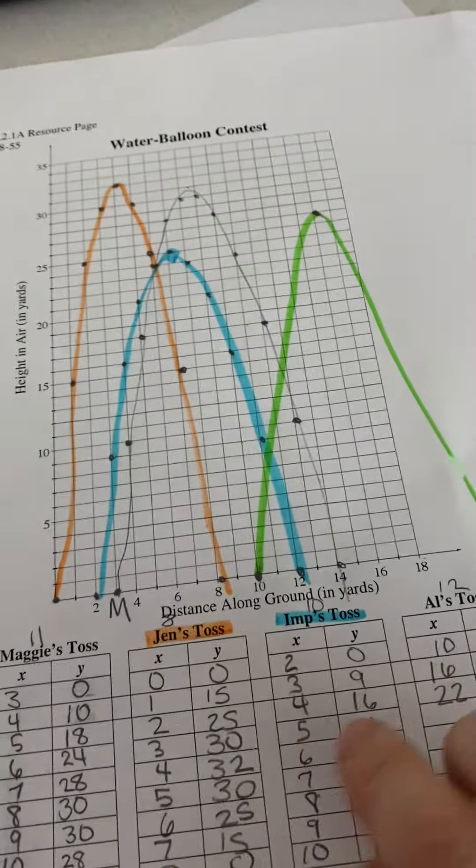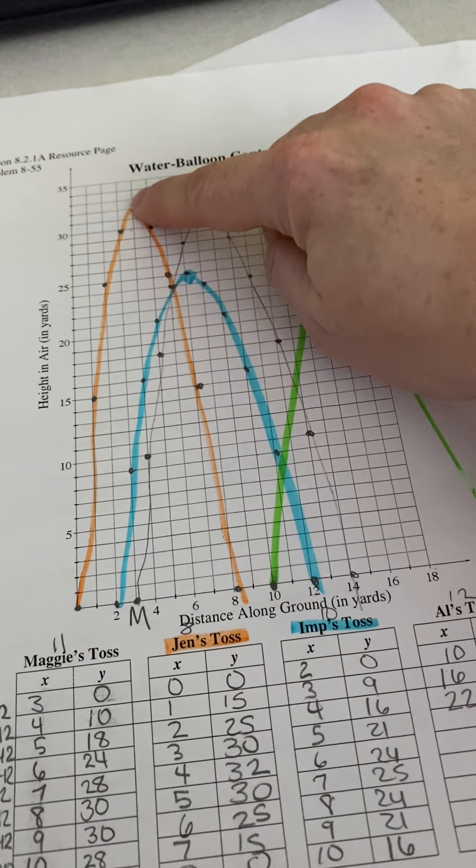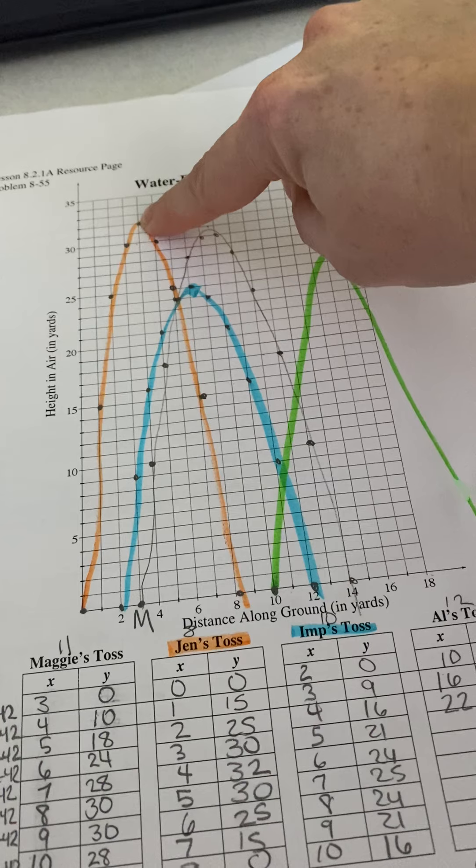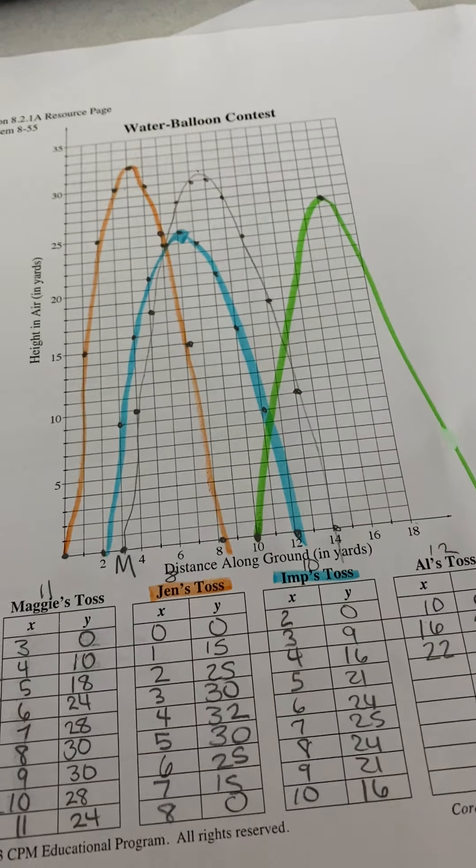And then the next one is the highest throw. Well, as you can imagine, the highest throw is going to be the tallest parabola. So, that's going to be Jen. She was in orange.